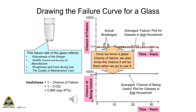Drawing the failure curve for a glass: the failure rate of the glass reflects the robustness of the design, quality and precision in manufacturing, roughness and care during use, and the quality of maintenance care. Once we know a glass's chance of failure, we also know the chance it will be there when we go to use it. Drinking glasses are unusual in that they do not wear out — most plant and equipment parts degrade with use. Because glasses do not break by themselves but break from accidents, we can say they only fail from human errors and acts of God. They are broken only when the circumstances and a failure mechanism align by chance — a chance event, but not a random event.